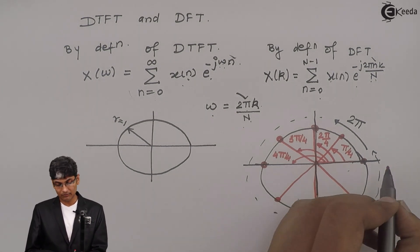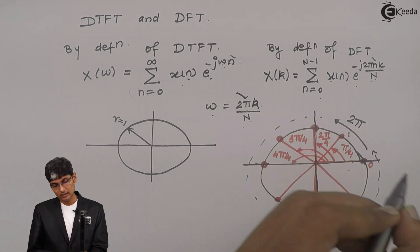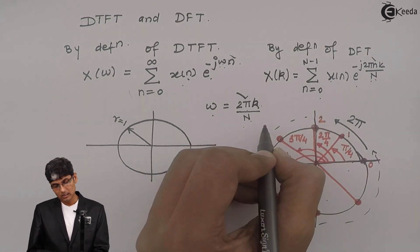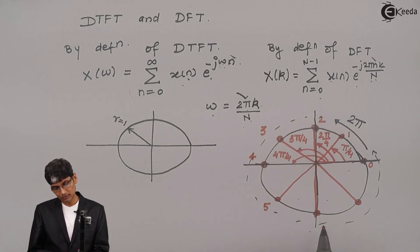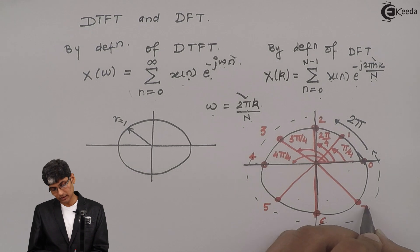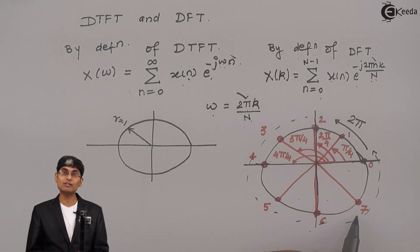And every angle will be having a multiplier or the value. For example, if I write like this: this is my 0th point, my 1st point, this is my 2nd point, my 3rd point, 4th point, 5th point, 6th point, and 7th point. Because I started from 0, my ending value will be 7.